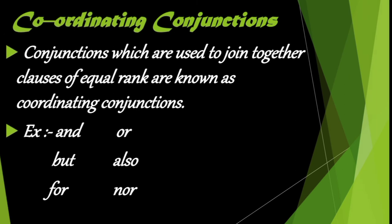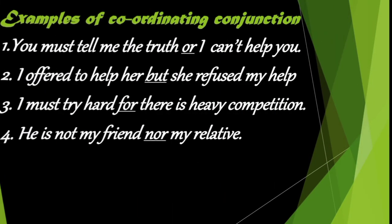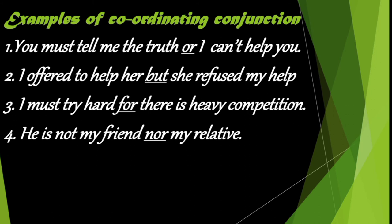The third kind is coordinating conjunctions. Conjunctions which are used to join together clauses of equal rank are known as coordinating conjunctions. Some examples are: and, or, but, also, for, nor. For example: 'You must tell me the truth or I can't help you.' 'I offered to help her but she refused.' 'I must try hard for there is heavy competition.' 'He is not my friend nor my relative.'